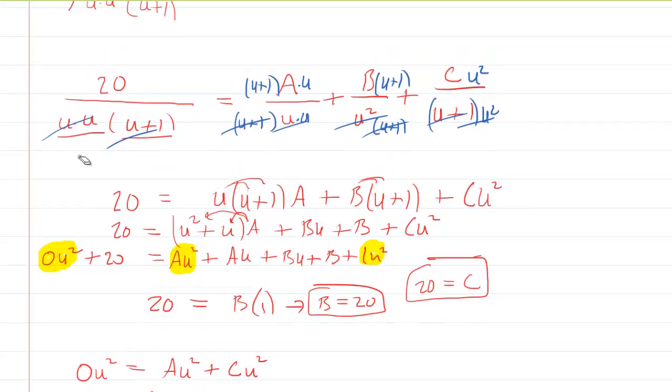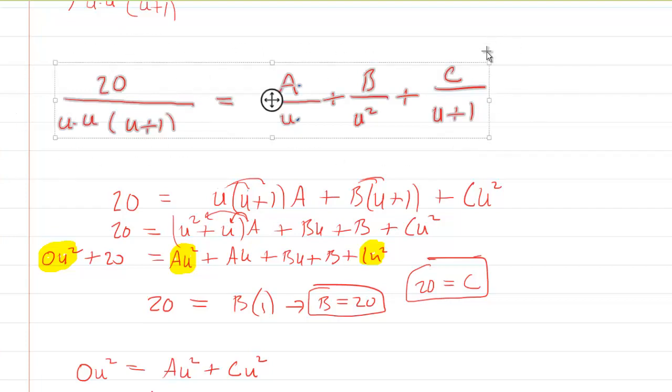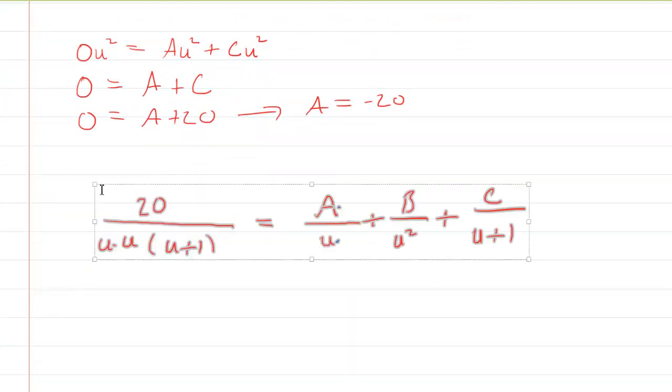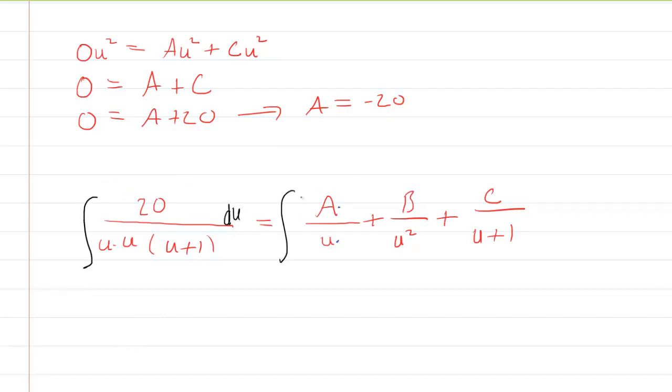Okay, so now we go back to our original little expression here that we were trying to integrate. And we recall before we had found the common denominator that it kind of looked like this. And so now that we have all the values of A, B, and C, we're going to put them in. So why don't we do this? Why don't we take this, copy it, and kind of carry it with us down here. Remember that we were trying to integrate this with respect to u. So we might as well put the integral symbol back on.